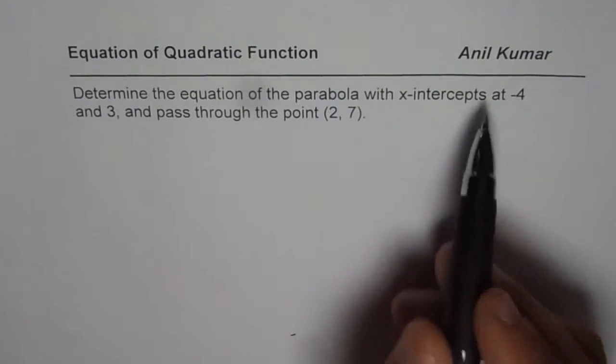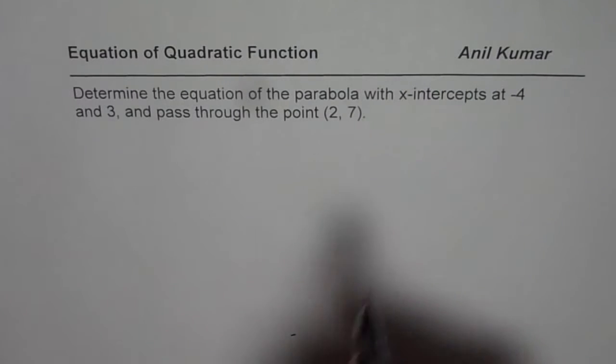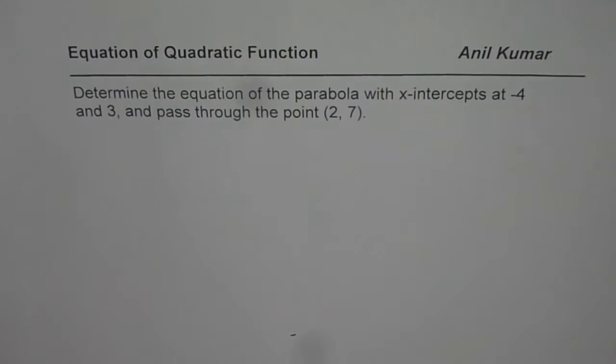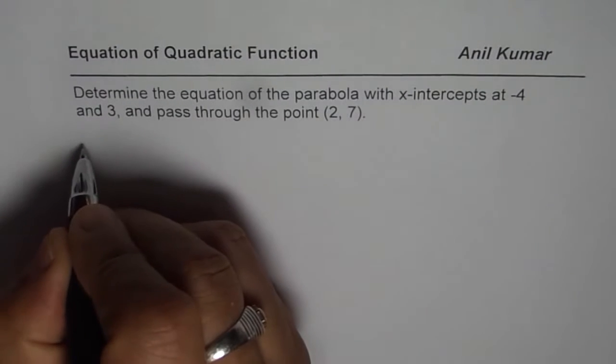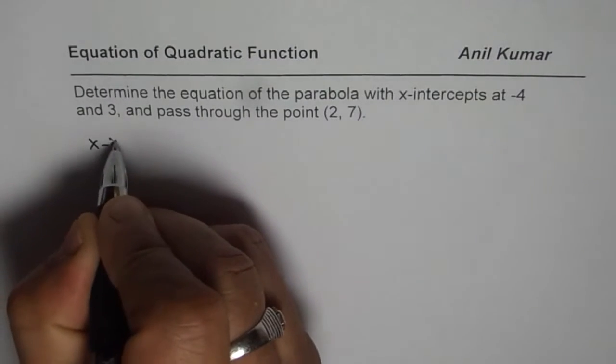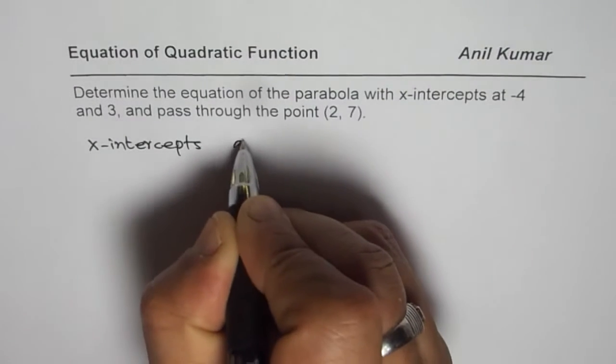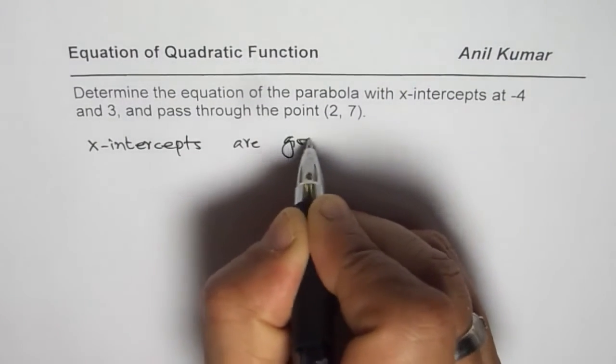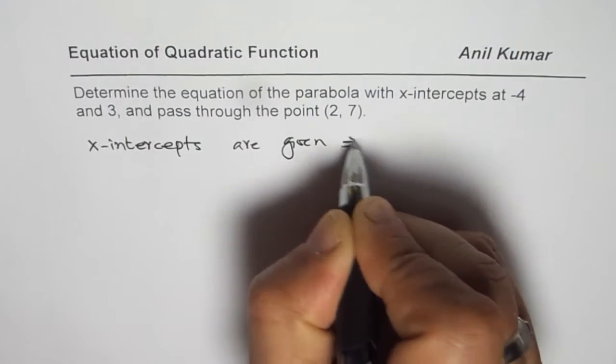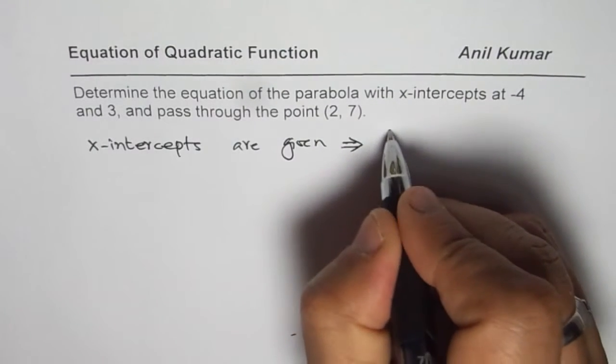Now, whenever x-intercepts are given, which form of the equation should we use? That is always the first question. So, since x-intercepts are given, let me write it down. It is very important. x-intercepts are given, so that means we should use which form? Factored form.